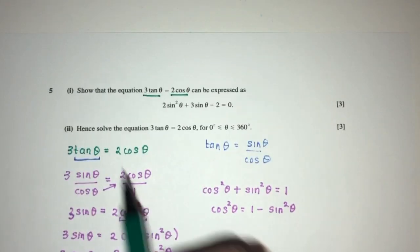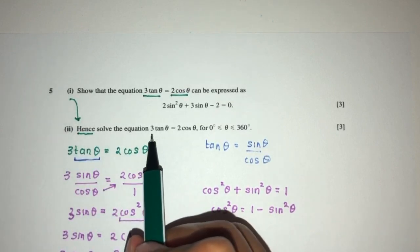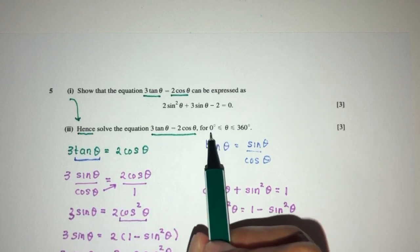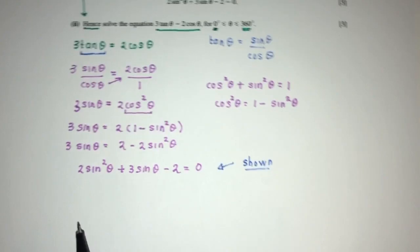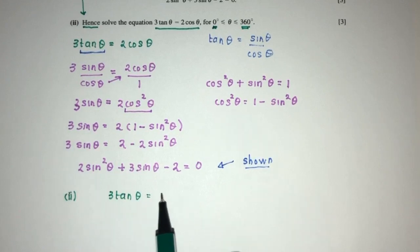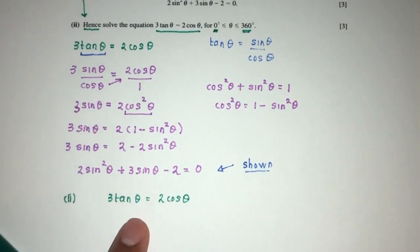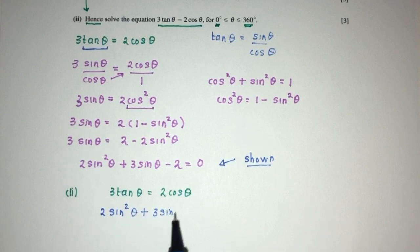Now for part 2, we have to, hence, hence means we have to use part 1, solve the equation, this, between the values of θ is between 0 and 360. So pretty easy. Now, we have to solve part 2. It is 3tan(θ) = 2cos(θ). Now, we understand that from the first part, this is also equal to 2sin²(θ) + 3sin(θ) - 2. That will be the value of 0.